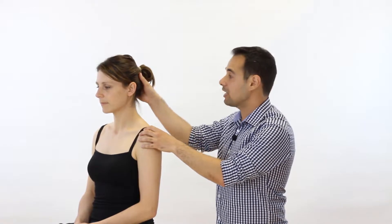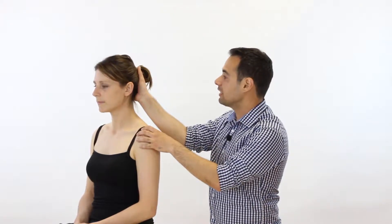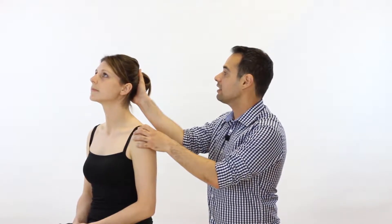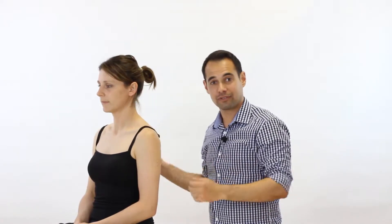From here, we ask the patient to extend their cervical spine into our hands to test the strength of the neck extensor muscles. The most common cheat you'll see during this test is that the patient tries to extend their lumbar and thoracic spine to generate more movement instead of simply extending the cervical spine.